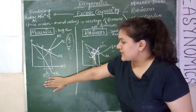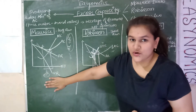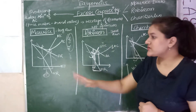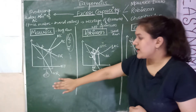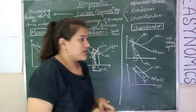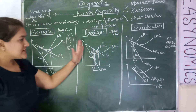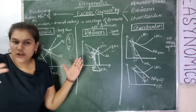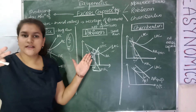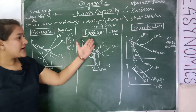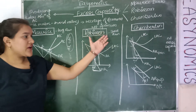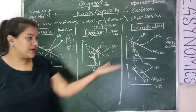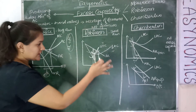This excess capacity concept was further explained by Robinson, who made some changes to it. Robinson explained that firms are not taking decisions in the long run and are not maximizing profit in the long run, but firms are trying to maximize profit in the short run only.